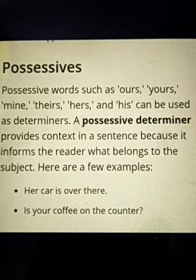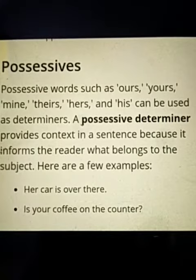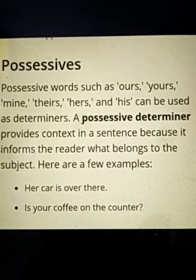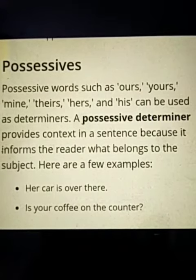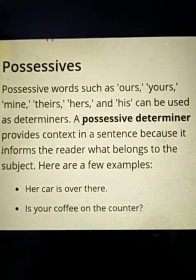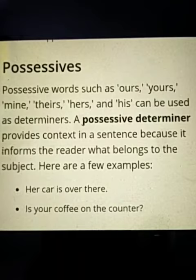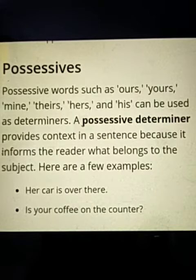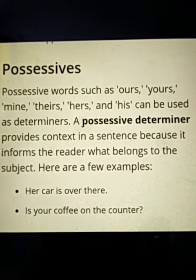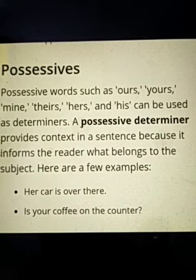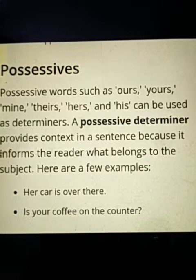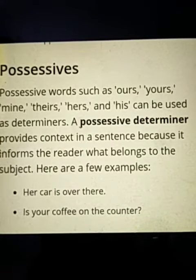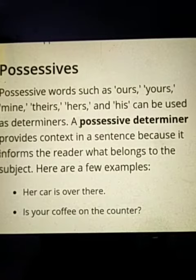Next is possessives. Possessive words such as ours, yours, mine, theirs, hers and his can be used as determiners. A possessive determiner provides context in a sentence because it informs the reader what belongs to the subject. Here are a few examples: 'Her car is over there.' 'Is your coffee on the counter?' No, etc.